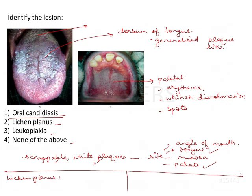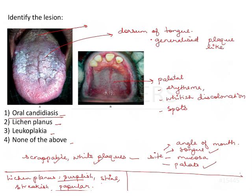Next is lichen planus. Lichen planus would be more purplish and would have more of a streaky appearance. Here it's not very purplish, not papular, and there are no striae — so lichen planus is eliminated.